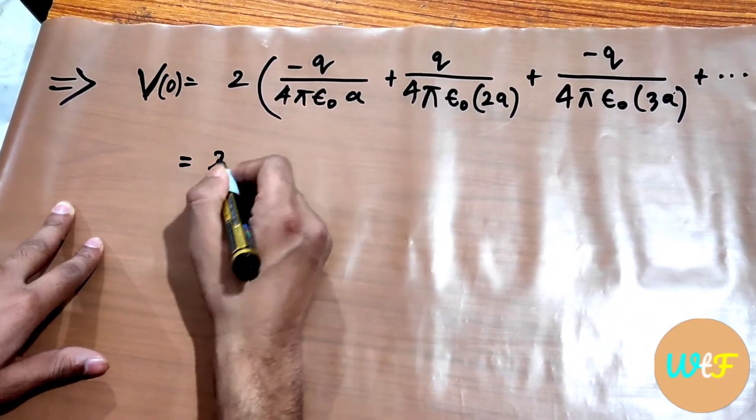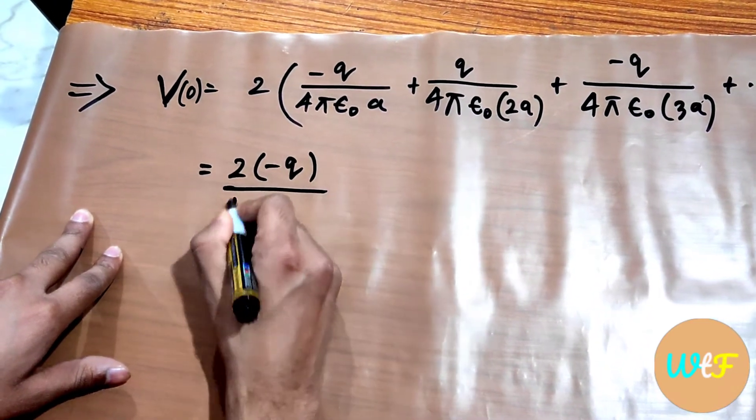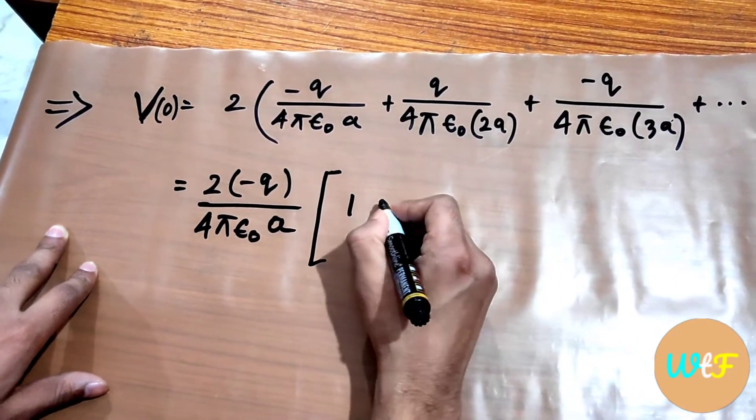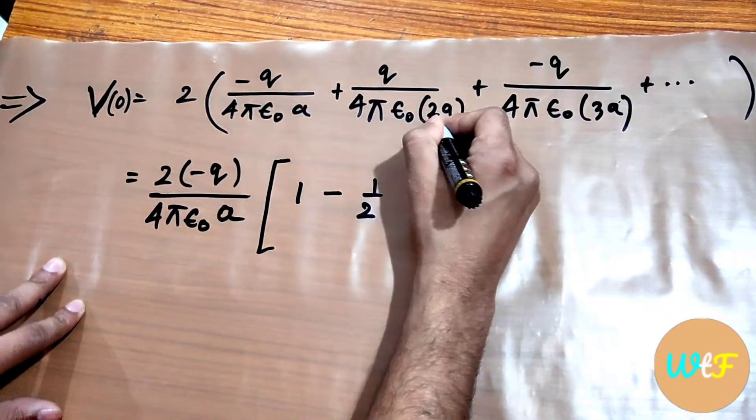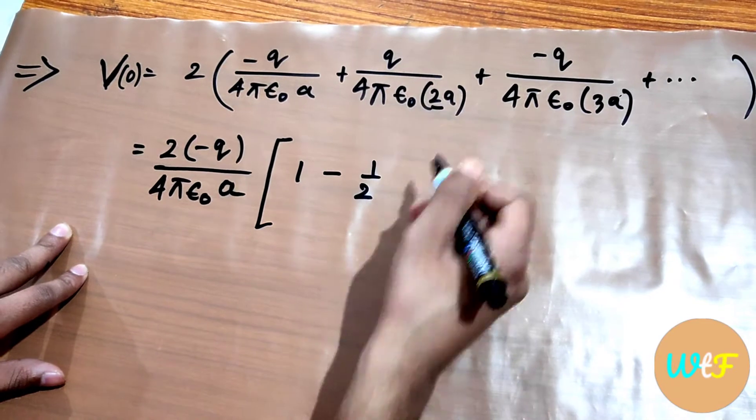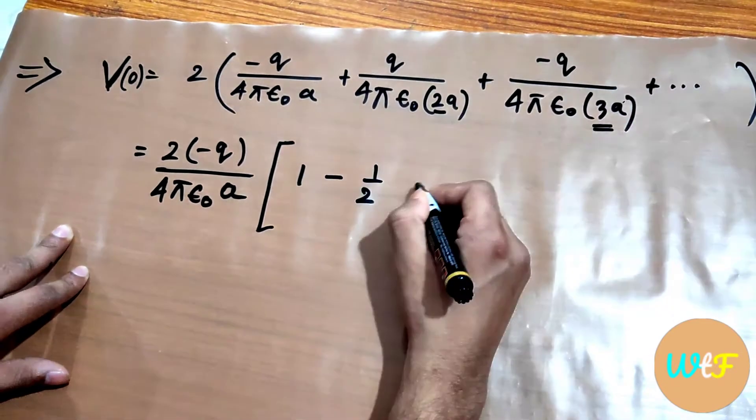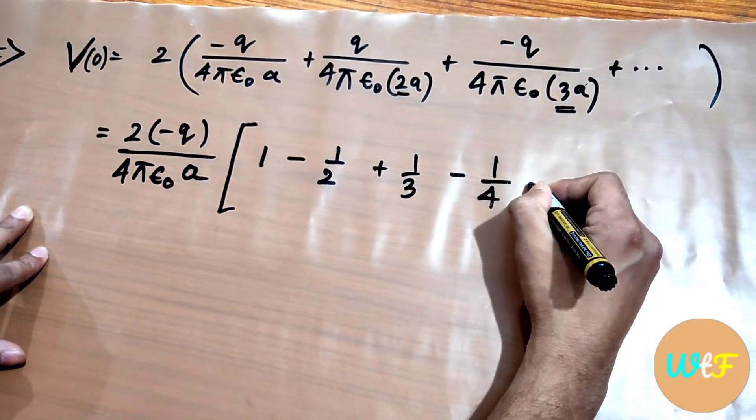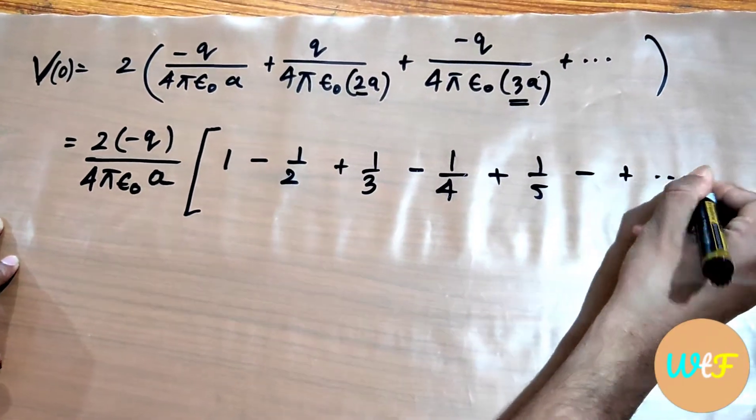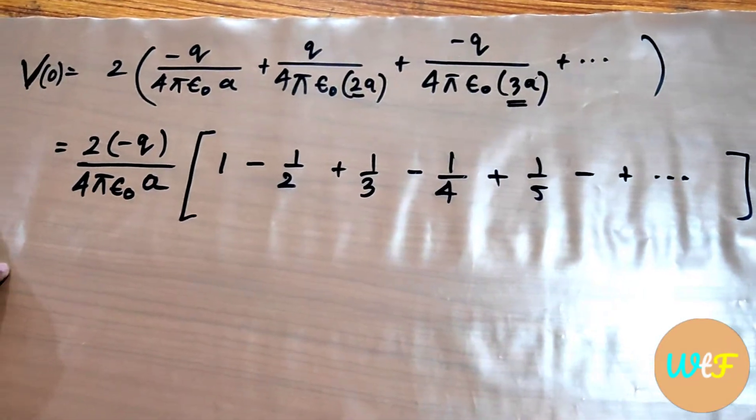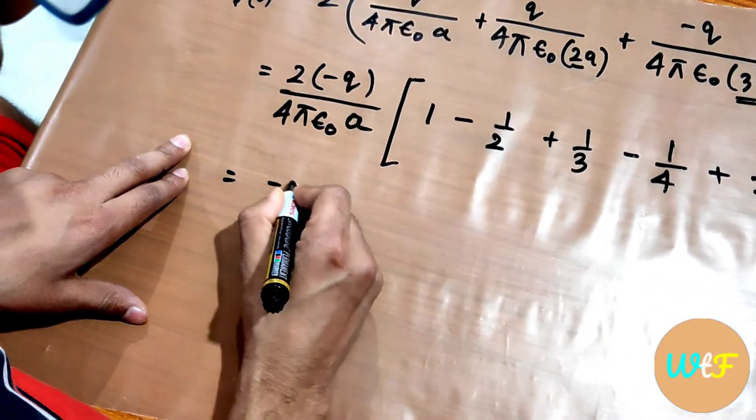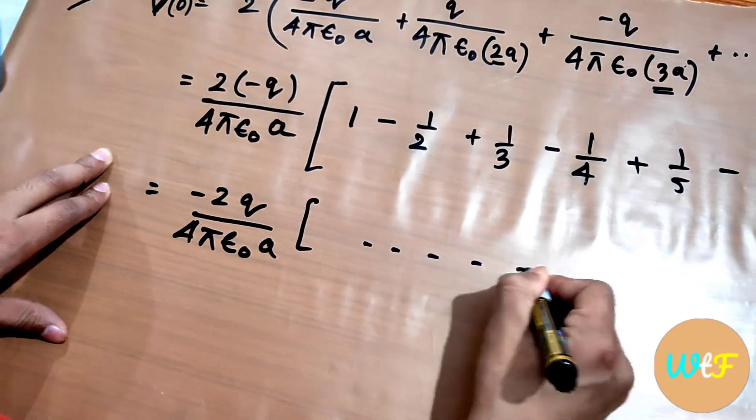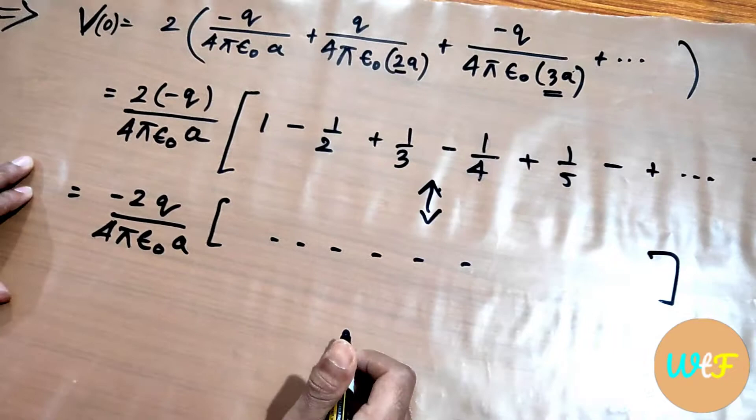I am taking 2 is already out, I will take minus q out divided by 4π ε₀ a out, and in the brackets I will be left with 1 minus 1 by 2 for this 2. Minus is already taken out, so this will be minus. For this 3, it will be 1 by 3, and then I think you have guessed it, it will be minus 1 by 4, 1 by 5, minus, plus, like this till infinity. So what we have here is minus 2q by 4π ε₀ and a long series, which is this.